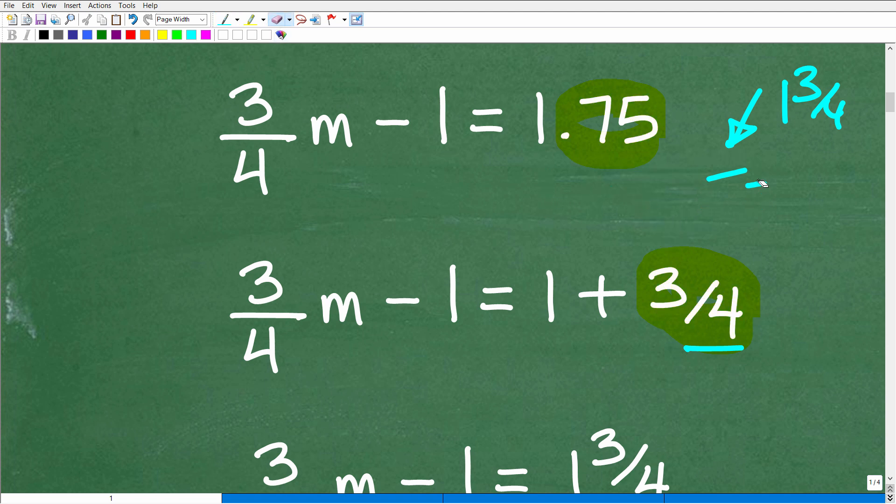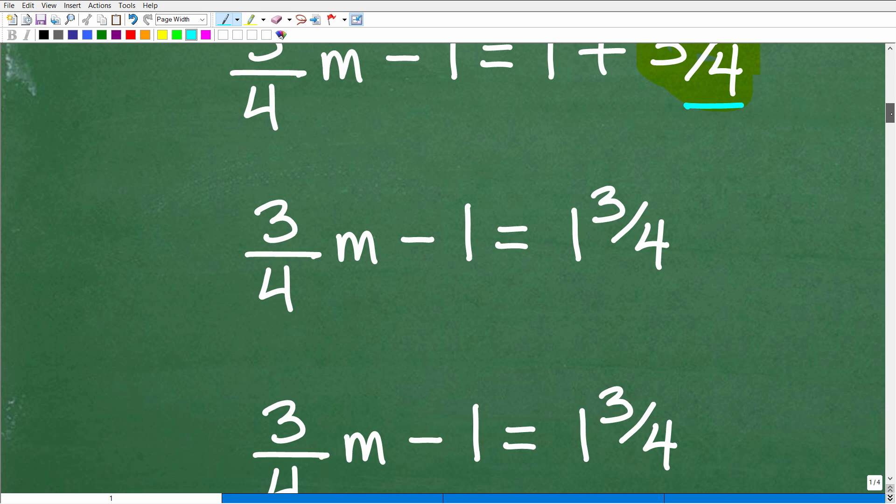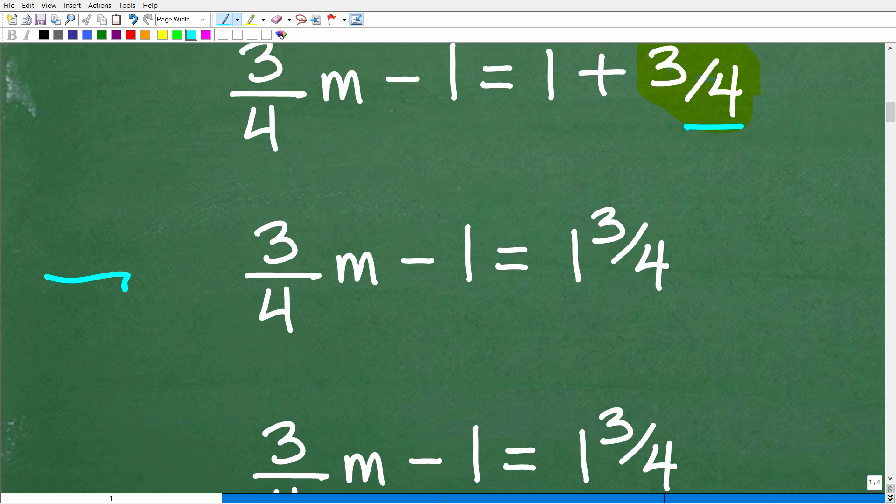All right, so let's go ahead and continue on. I'm going to erase this right here. So we have 3-fourths M minus 1 is equal to 1 plus 3-fourths, which, of course, is the same thing as 1 and 3-fourths. So now, finally, we have an equation here all in fractions. All right, so what do we need to do? Well, when you're solving an equation, a basic linear equation in algebra, what you want to do is get all your variable terms on the left-hand side. So you can see here the only variable term we have is 3-fourths M. It's already on the left-hand side, but you want to get all your numbers on the right. And here we have this negative 1. We need to get that over to the other side of the equation. So how do we make that happen?